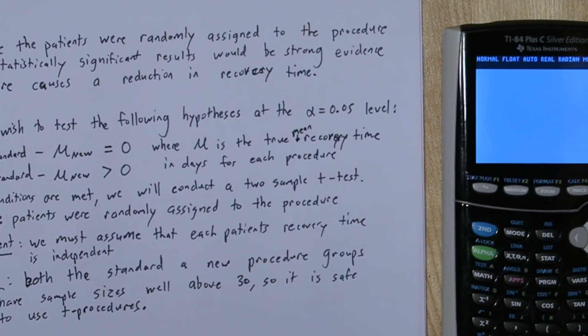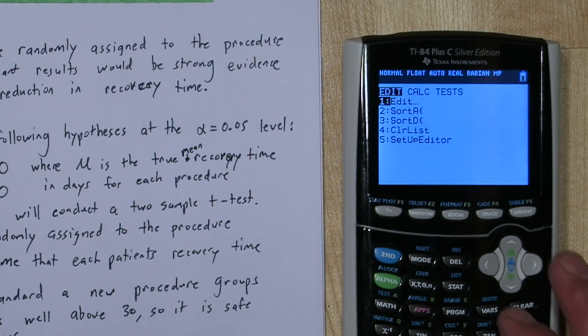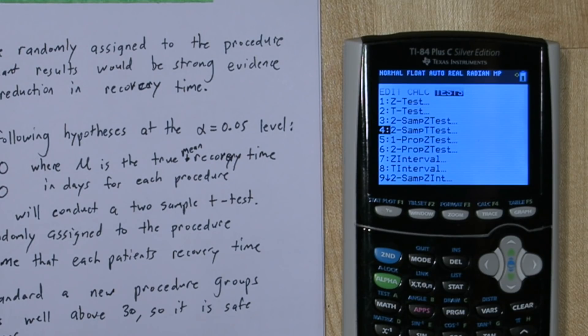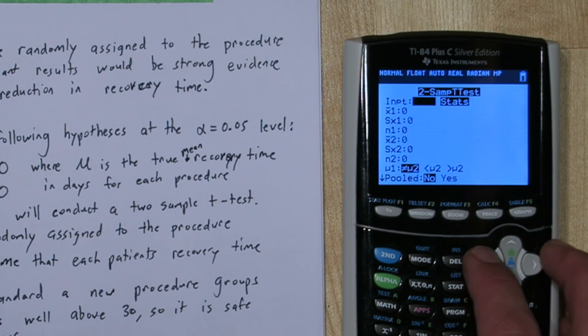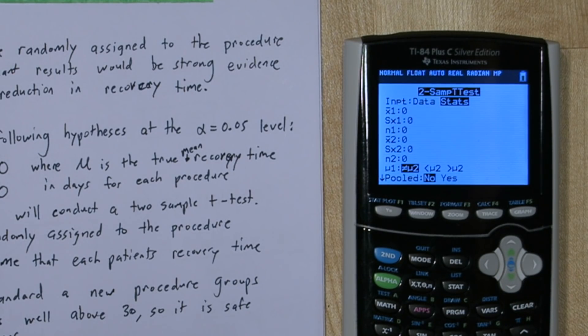Now most of the do step is going to be done on the calculator. So you start by pressing stat and go over to test and down to two-sample t-test. Now you have the option of inputting the original data, which we don't have, or the summary statistics, which we do have. So we actually have all this information.